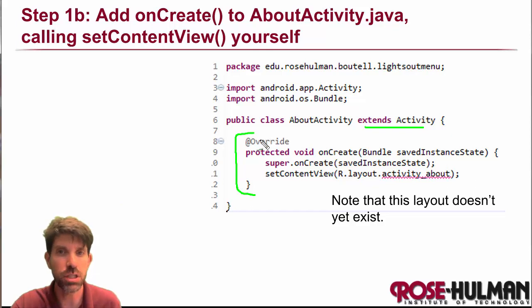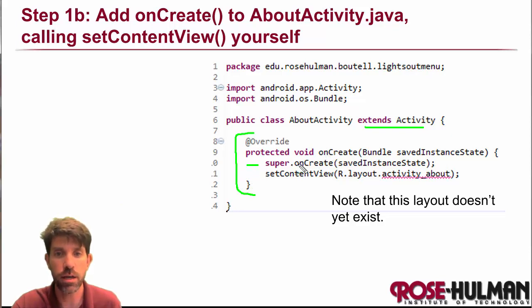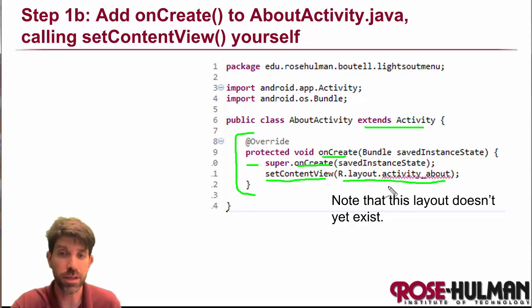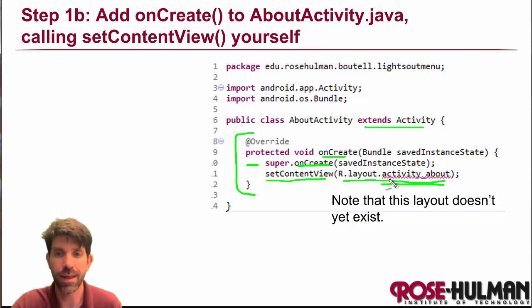This is usually stubbed in for us, but we would have to make it here — calling the superclass onCreate and also setting the content view to our own layout. We use the same naming convention: 'layout' dot 'activity_underscore' and then the name of the activity.